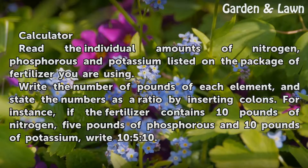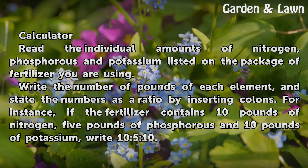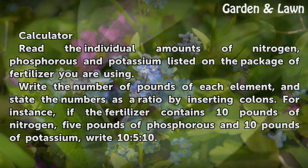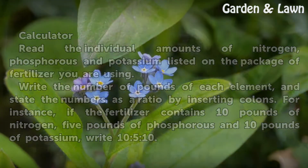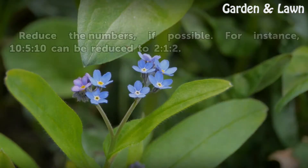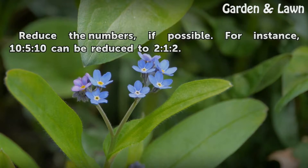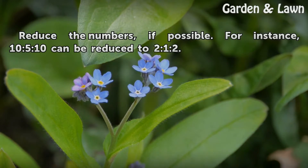For instance, if the fertilizer contains 10 lbs of nitrogen, 5 lbs of phosphorus and 10 lbs of potassium, write 10:5:10. Reduce the numbers, if possible. For instance, 10:5:10 can be reduced to 2:1:2.